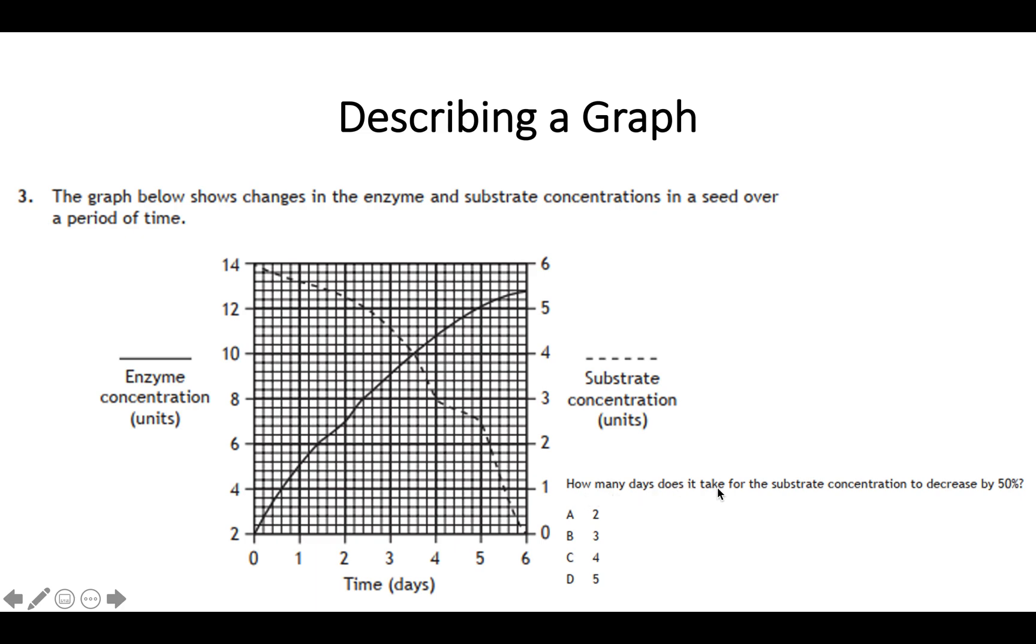First of all, what is being asked of you? The question says how many days does it take for the substrate concentration to decrease by 50%? So we're going to be looking at the substrate concentration. We are not going to be paying attention to the enzyme concentration at all, so just ignore this side. The other thing is we need to pay attention to only this scale here. The substrate concentration is on this side, we have zero to six. We are not paying attention to the 2 to 14 on this end at all. You can also see through the key or legend that substrate concentration is shown as a dotted line, whereas the enzyme is a straight line. So if you have more than one line on a graph, you could use different styles of a line or different colors. So we ignore the straight line because that is for enzymes and only pay attention to the dotted line.